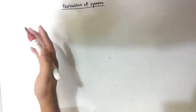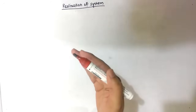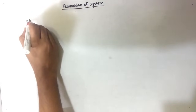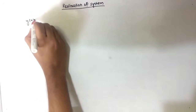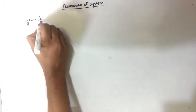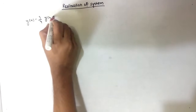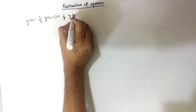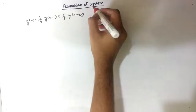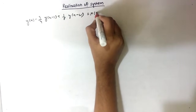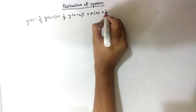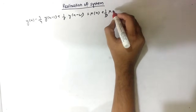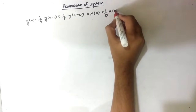Our question is: obtain the Direct Form 1 and Direct Form 2 structure for the equation y(n) minus (3/4)y(n-1) plus (1/8)y(n-2) equals x(n) plus (1/3)x(n-1).